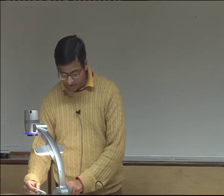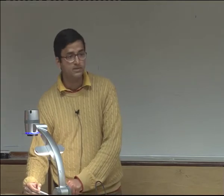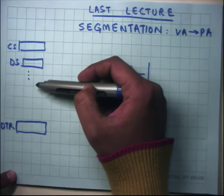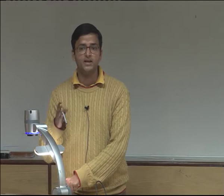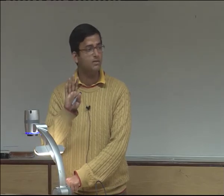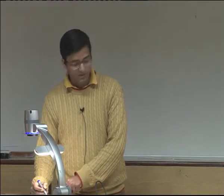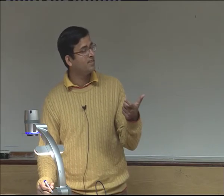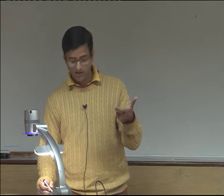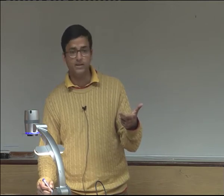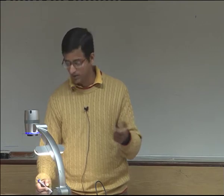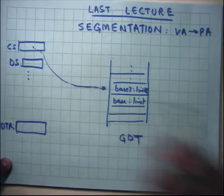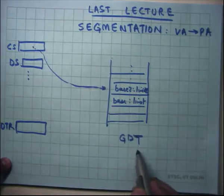This is how segmentation works. There are multiple segment registers. Every virtual address that an application specifies — which could be specified using direct, indirect, or displaced modes that we have already seen in the instruction encodings — has to be prefixed with a segment ID. The address computed by an instruction is actually the offset inside the segment specified by the segment ID, which could be CS, DS, or whatever.